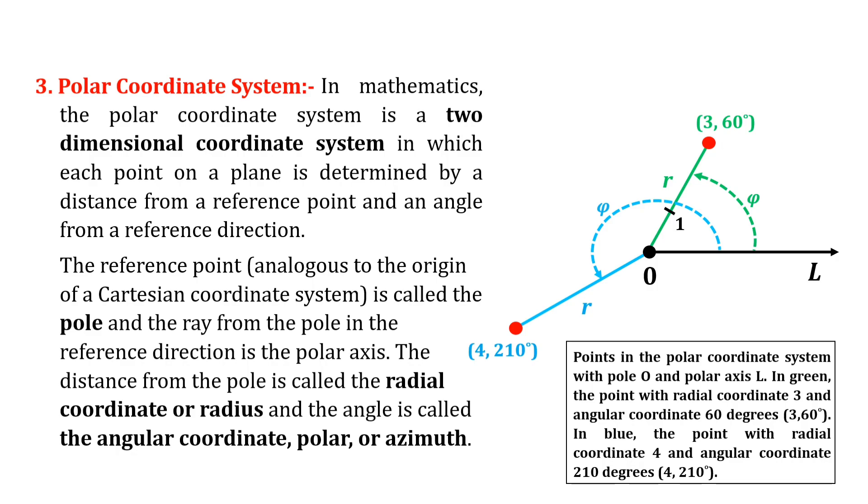The distance from the pole is called the radial coordinate, radial distance, or simply radius. The angle is called the angular coordinate, polar angle, or azimuth.